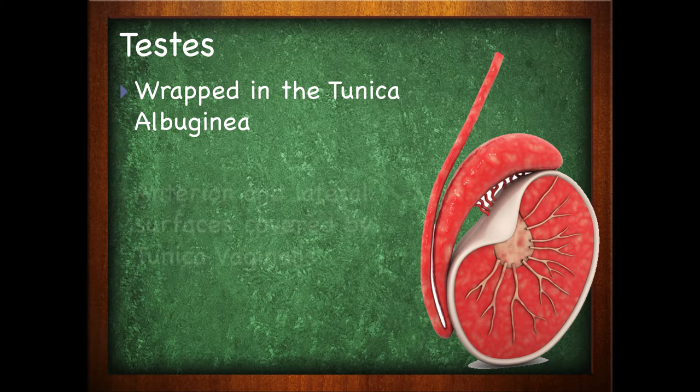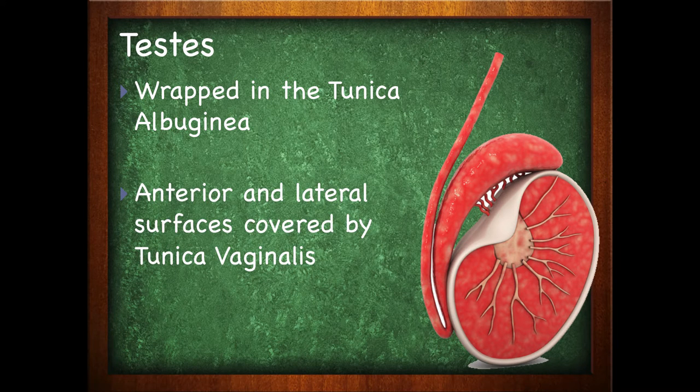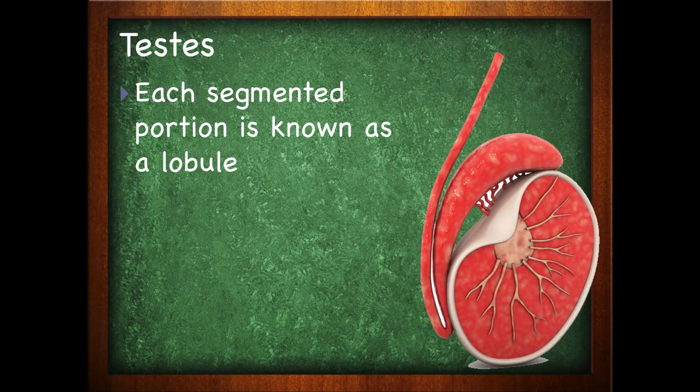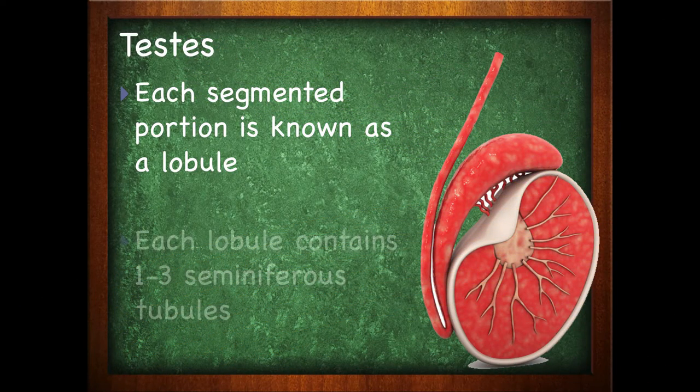The anterior and lateral surfaces are covered by the tunica vaginalis. Inside the testes, they're divided kind of like a grapefruit. If you've ever opened up a grapefruit or an orange, you'll notice that they are segmented with a membrane in between the pulp. That's kind of what the testes are like inside — they are divided off into segments. Each segmented portion is known as a lobule. Each lobule will contain one to three seminiferous tubules.